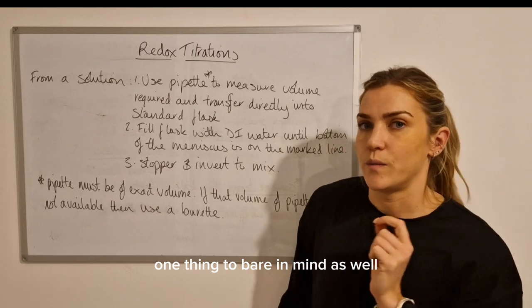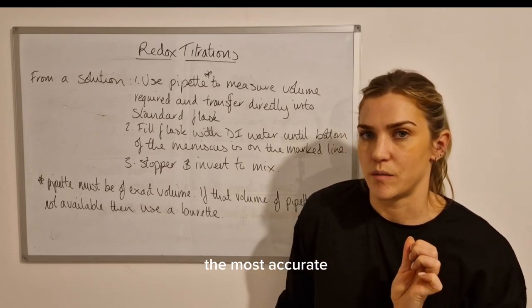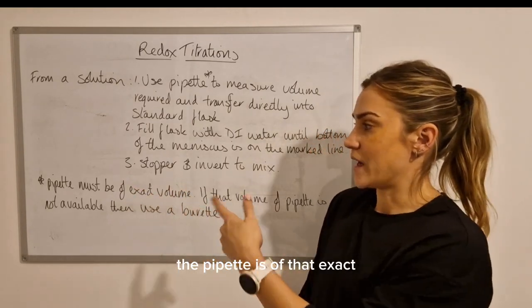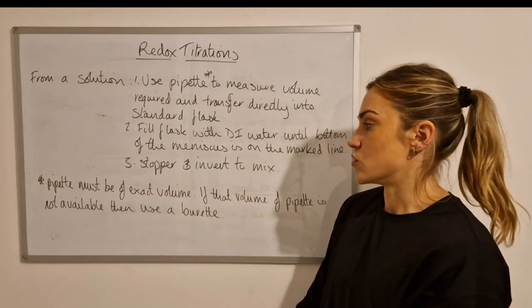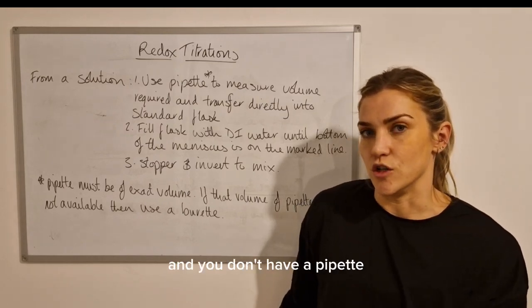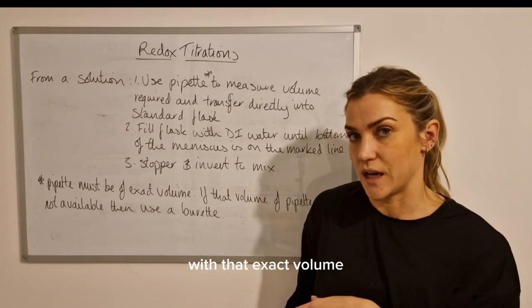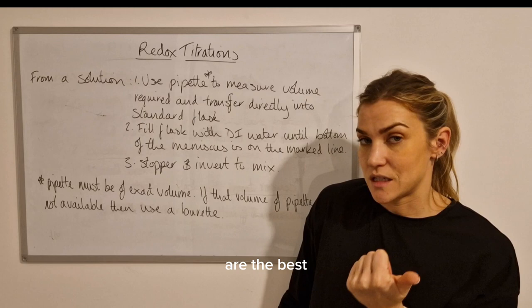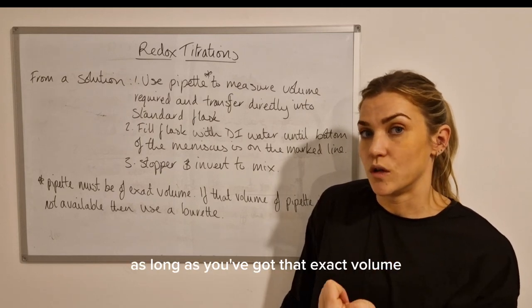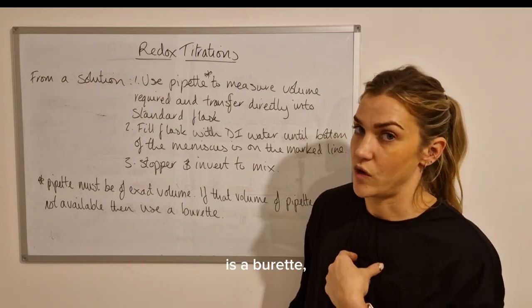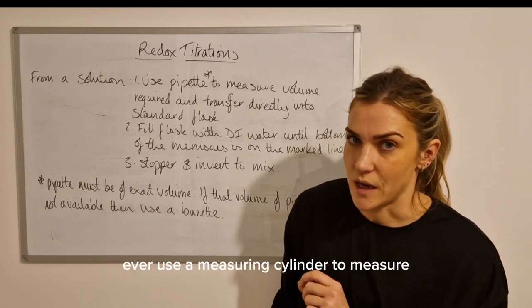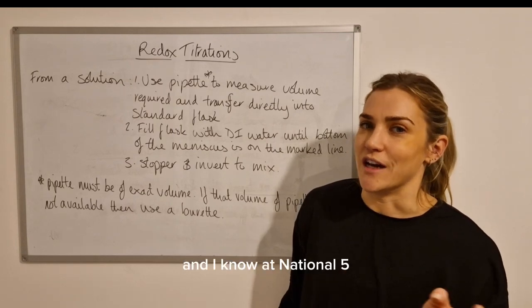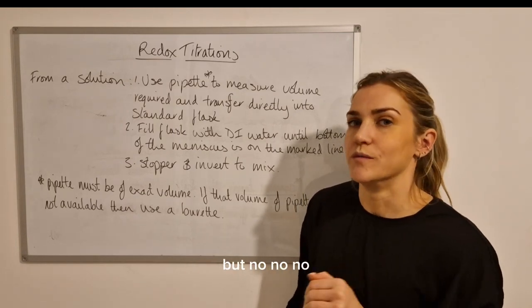One thing to bear in mind as well - pipettes are the most accurate piece of apparatus for measuring out volumes of liquids. However, that's only if the pipette is of that exact volume you need. So if there's a volume that you're trying to measure and you don't have a pipette with that exact volume, the next best thing is a burette. Pipettes are the best as long as you've got that exact volume of pipette; if not, the next best thing is a burette. I never ever ever use a measuring cylinder to measure the volume of any liquids. I know at National 5 we let you do it, but no no no - very inaccurate.